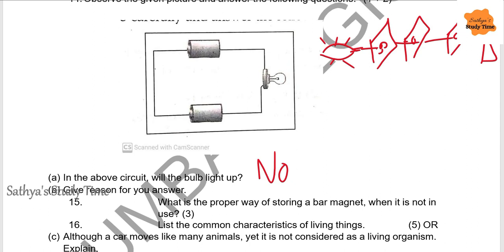Question 15: What is the proper way of storing a bar magnet when not in use? Bar magnets should be stored in a wooden container so they do not attract metals. Bar magnets should be stored in pairs — the north pole of one magnet against the south pole of another magnet.